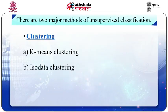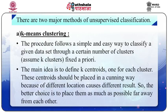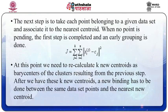There are two main methods of unsupervised classification: clustering, which includes k-means clustering and ISODATA clustering. K-means is one of the simplest unsupervised learning algorithms that solves the well-known clustering problem. The procedure follows a simple and easy way to classify a given data set through a certain number of clusters, assumed to be k clusters fixed a priori. The main idea is to define k centroids, one for each cluster. These centroids should be placed in a cunning way because different locations cause different results, so the better choice is to place them as far as possible from each other. The next step is to take each point belonging to the given data set and associate it to the nearest centroid. When no point is pending, the first step is completed and an early grouping is done.